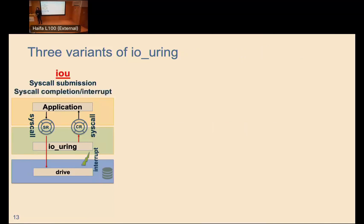The first variant is the default, which we call io_uring Simple. This is what you get if you don't specify any flags. io_uring Simple uses one system call to submit IO requests to the kernel — mostly to notify the kernel there is something in the submission queue — and one system call to retrieve completion notifications. It uses interrupts and has less data-copy overhead compared to LibAIO.